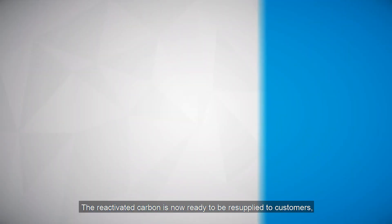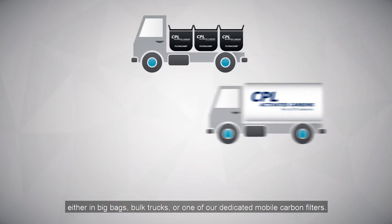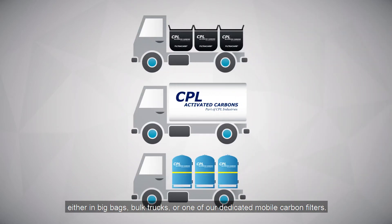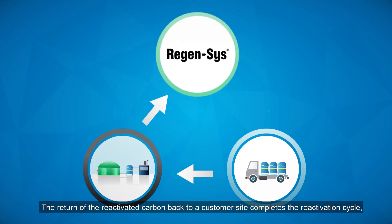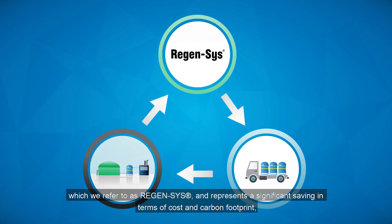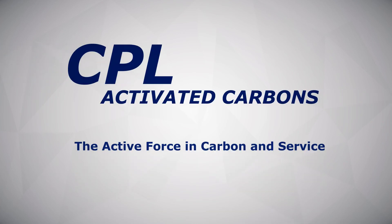The reactivated carbon is now ready to be resupplied to customers, either in big bags, bulk trucks or one of our dedicated mobile carbon filters. The return of the reactivated carbon back to a customer site completes the reactivation cycle, which we refer to as Regensys, and represents a significant saving in terms of cost and carbon footprint compared with the use of brand new or virgin activated carbon. CPL Activated Carbons — the active force in carbon and service.